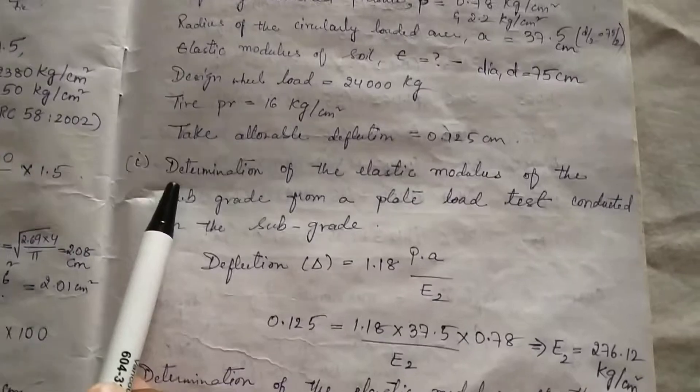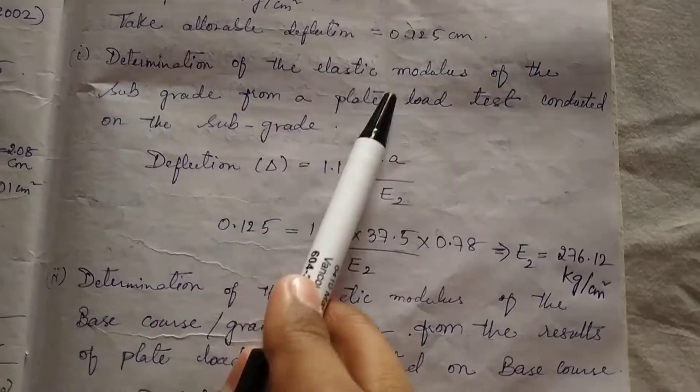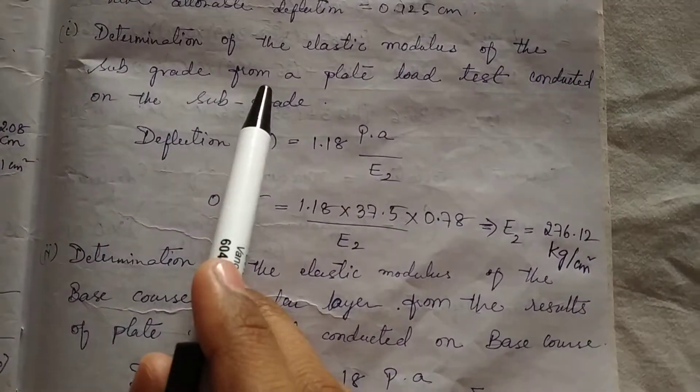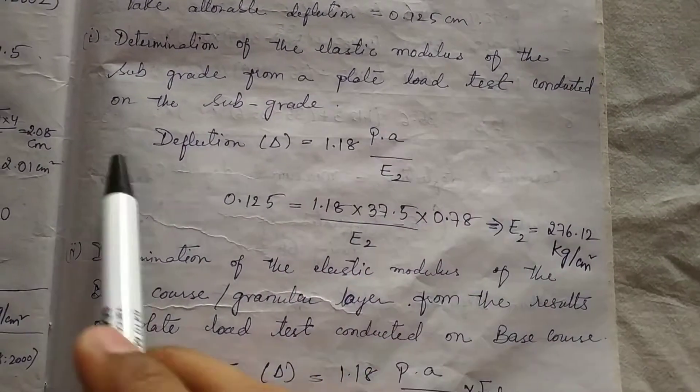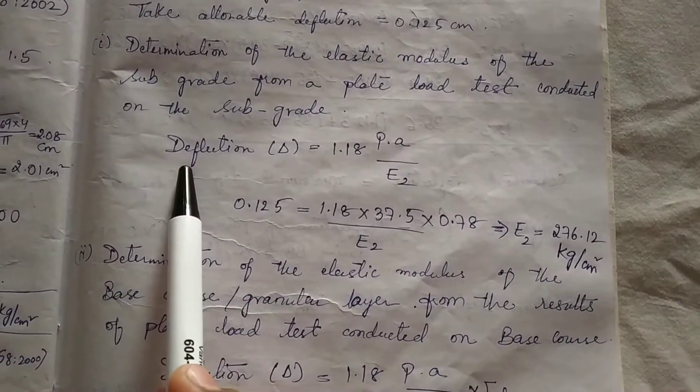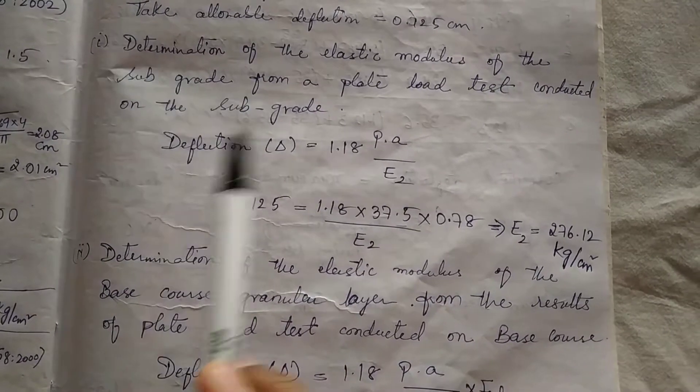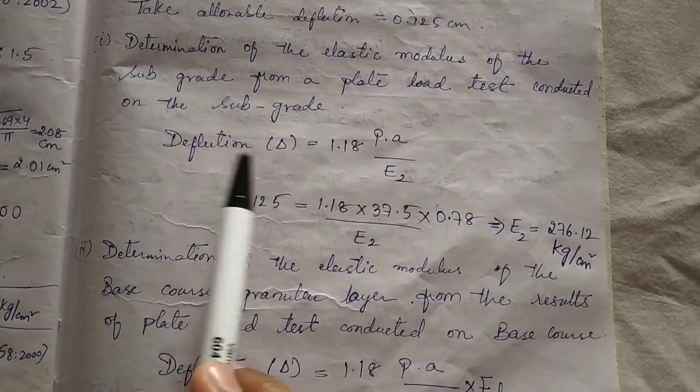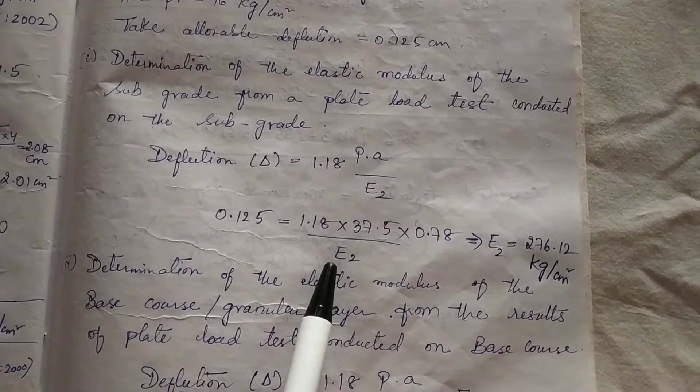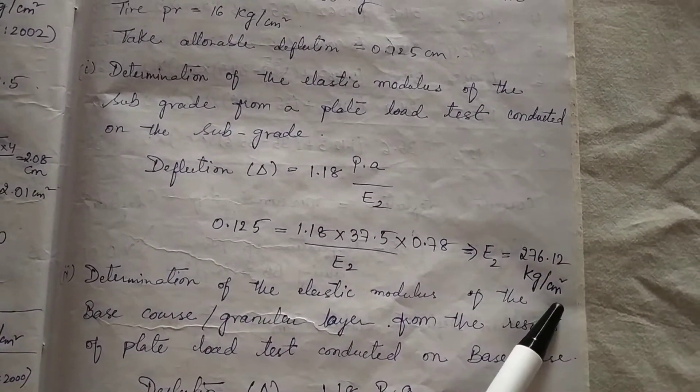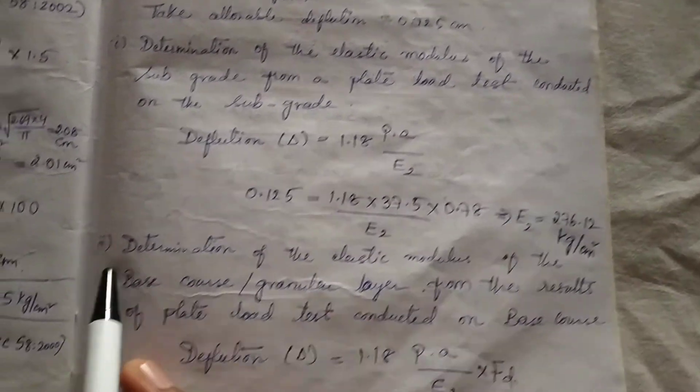First step: we will determine the elastic modulus of the subgrade from a plate load test conducted on the subgrade. We have the formula for finding the elastic modulus: deflection delta is equal to 1.18 PA by E2. From this we will get the value for E2 in kg per centimeter square.